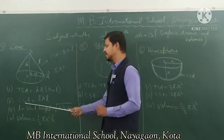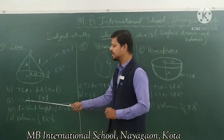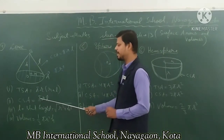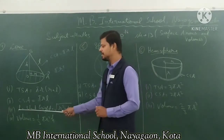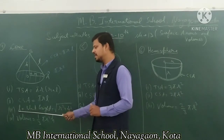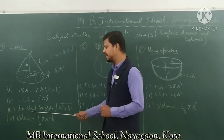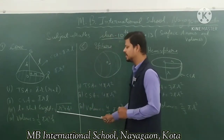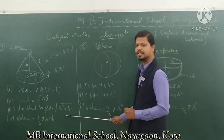The curved surface area is pi r l — pi multiplied by r multiplied by l. Now if you need to find the slant height l, the formula is: l equals square root of r square plus h square.